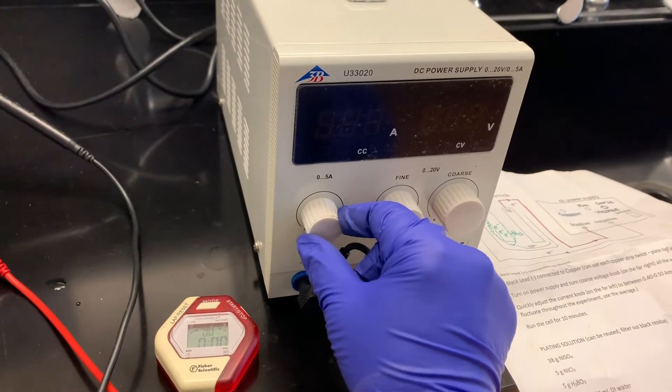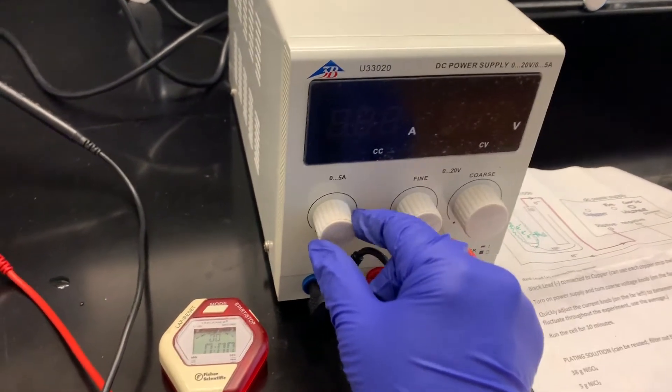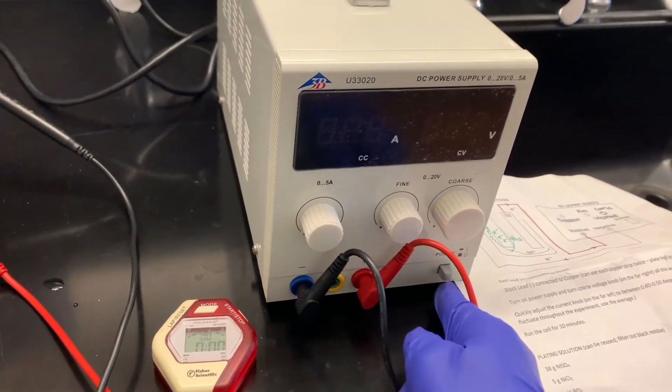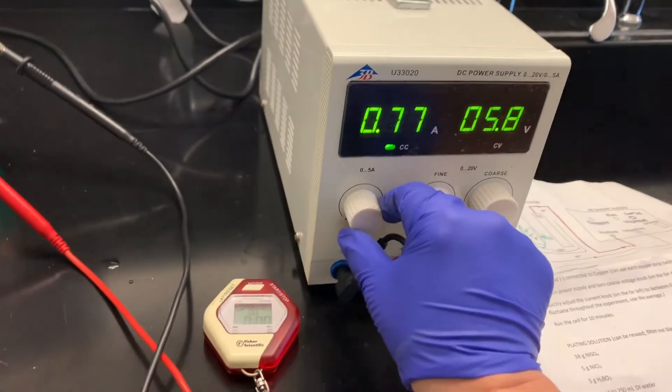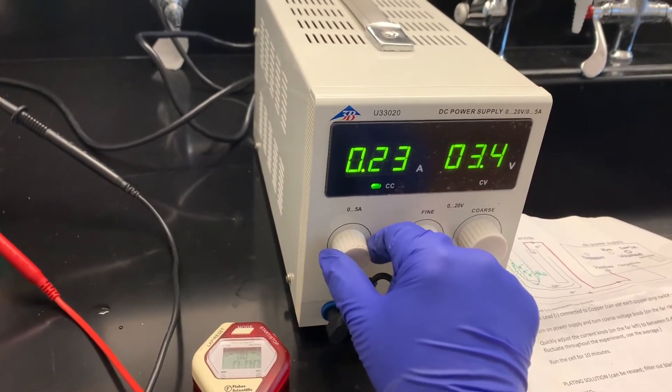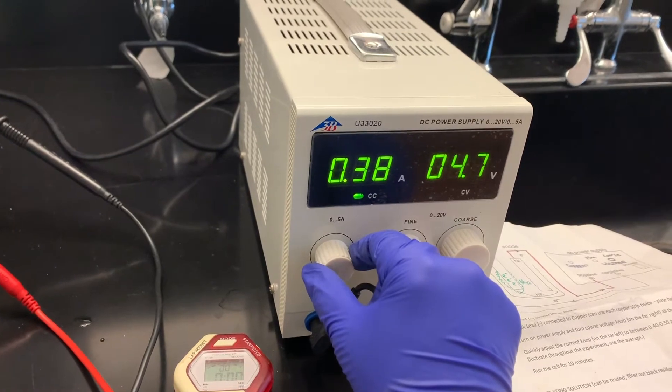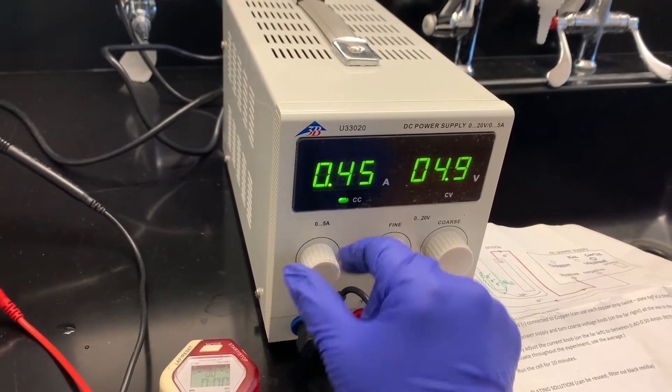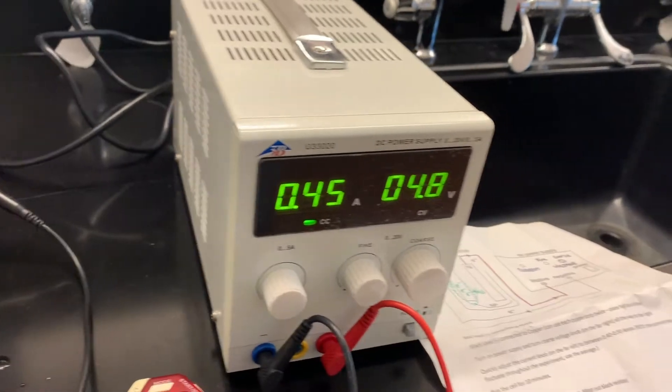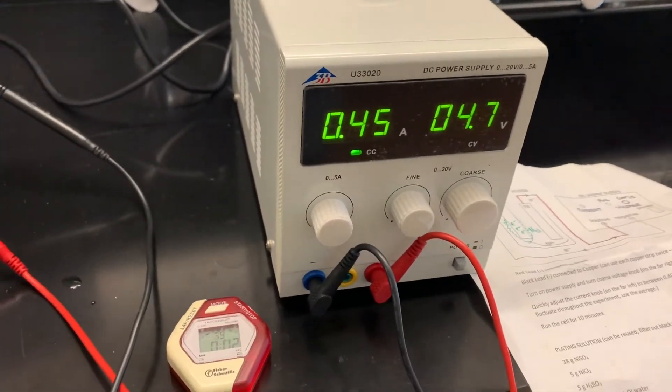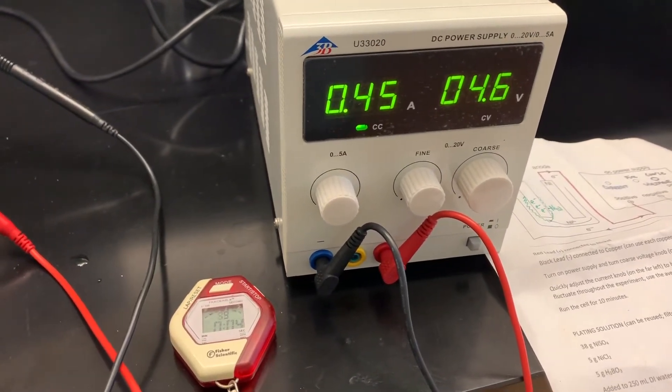This is the current one, between 0.4 and 0.5 amps, and we're going to run it for about 10 minutes. I'm going to quickly adjust this to about 0.4, 0.5. I'm going to start my stopwatch, and we'll check back in about 10 minutes and see what happens.